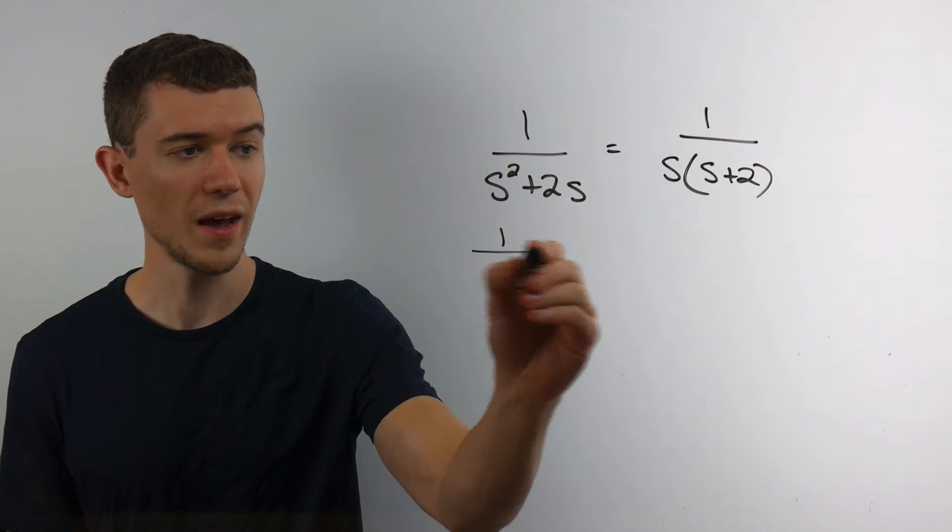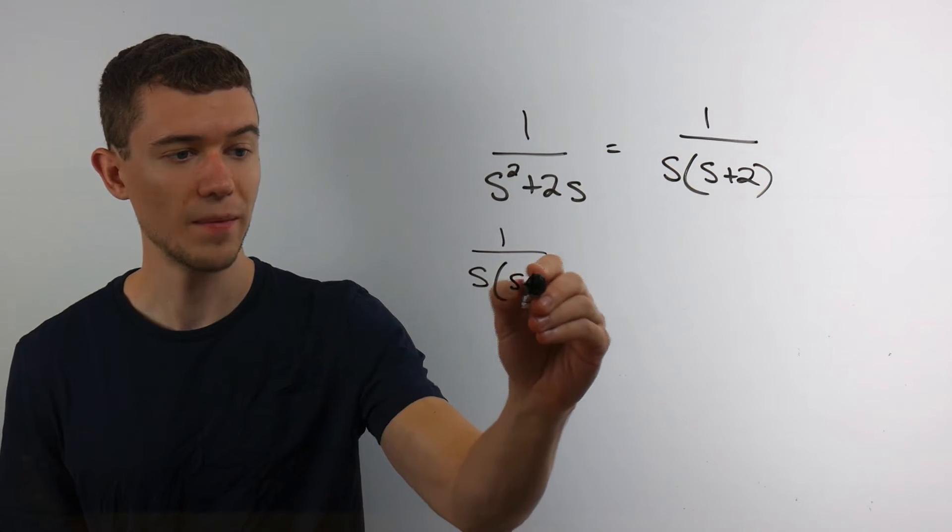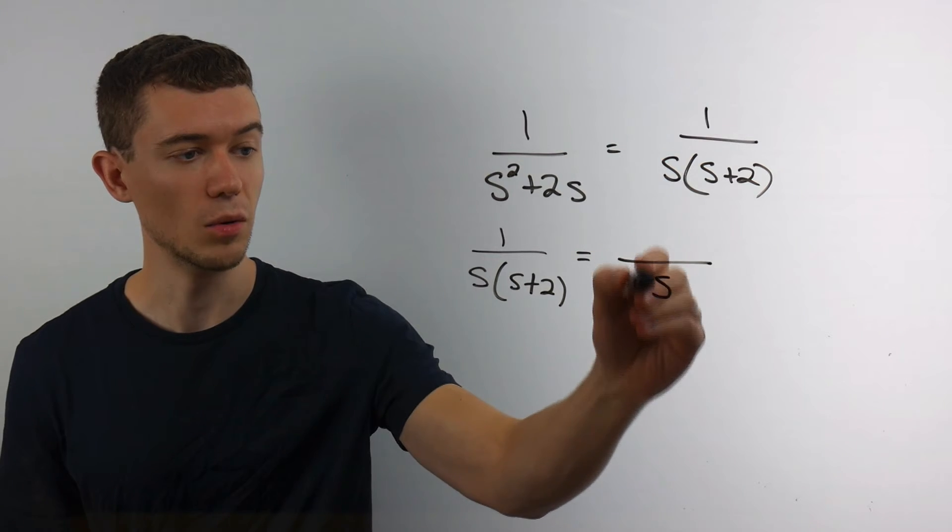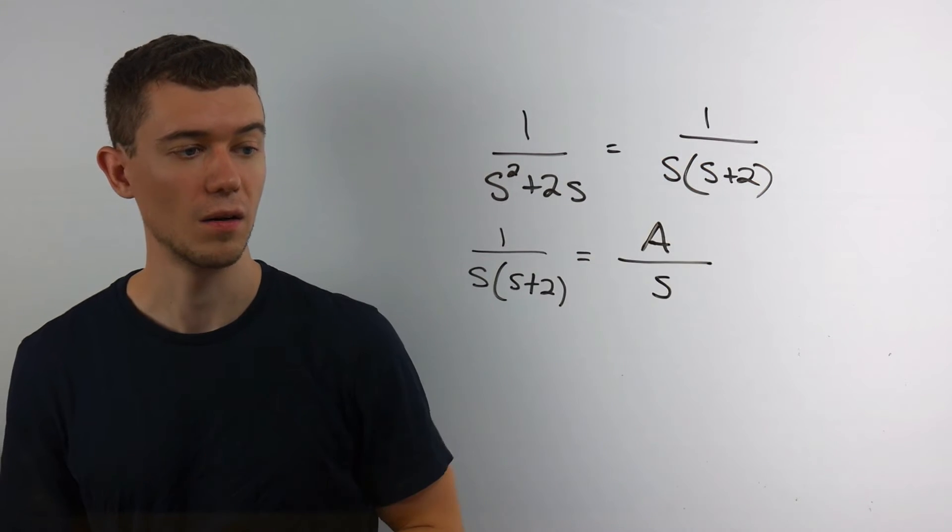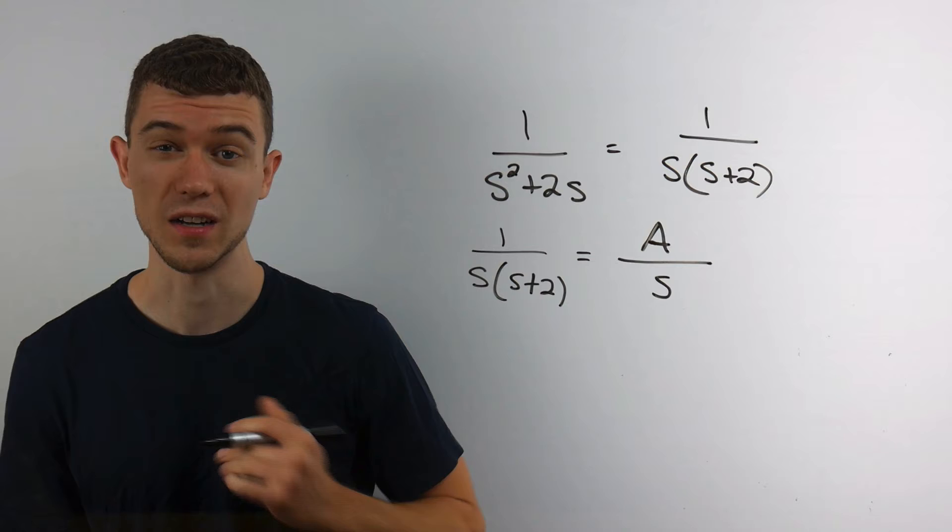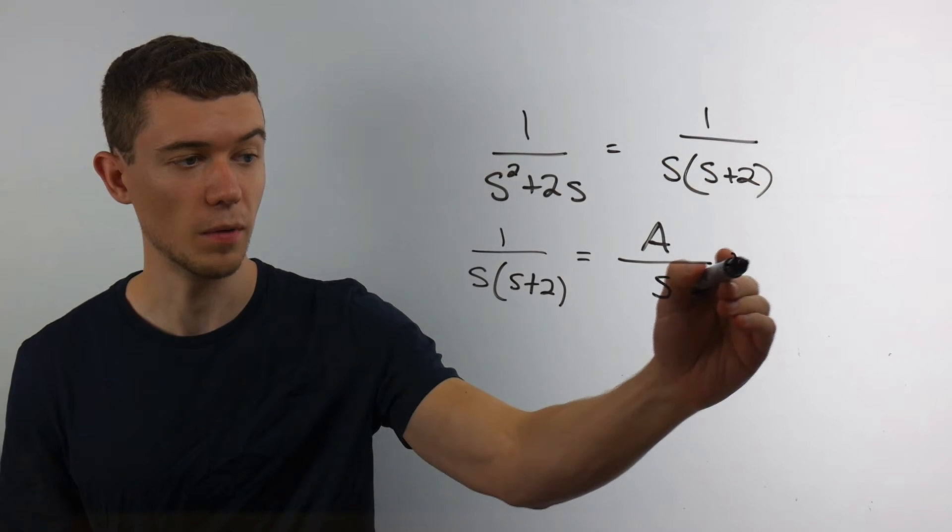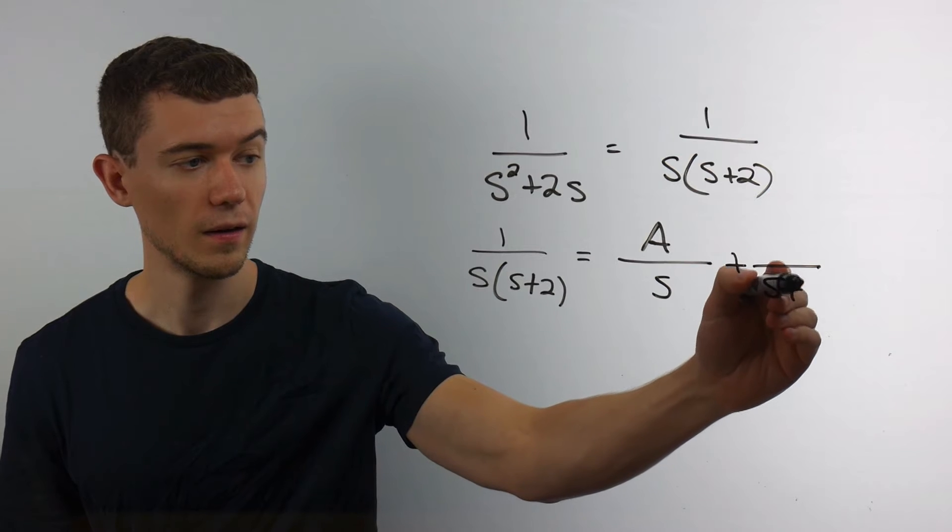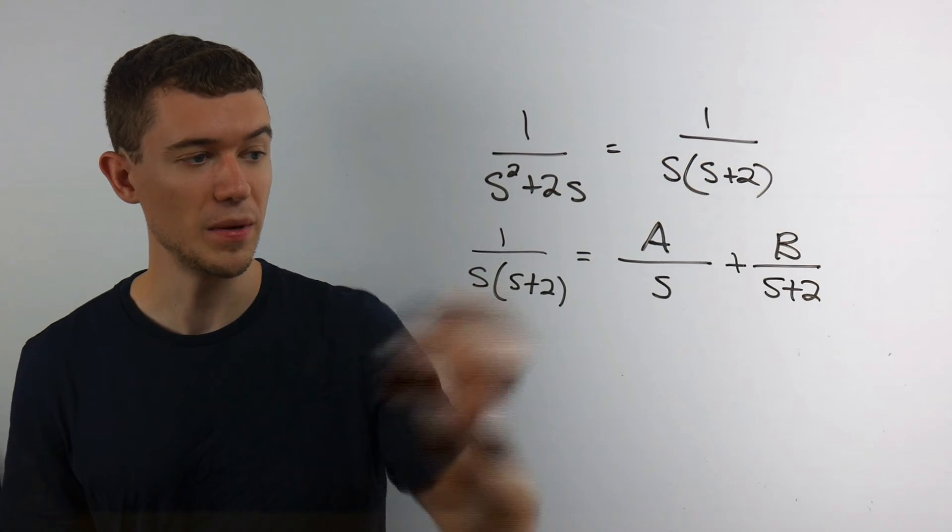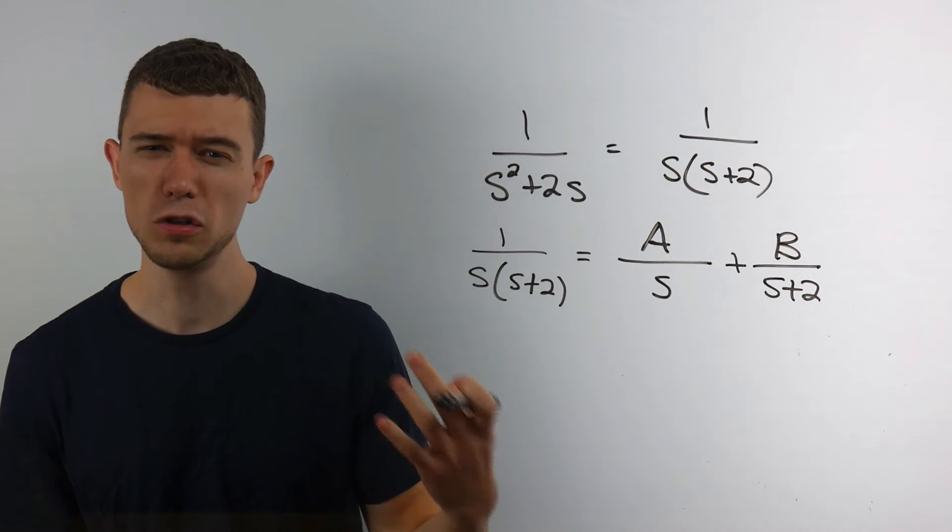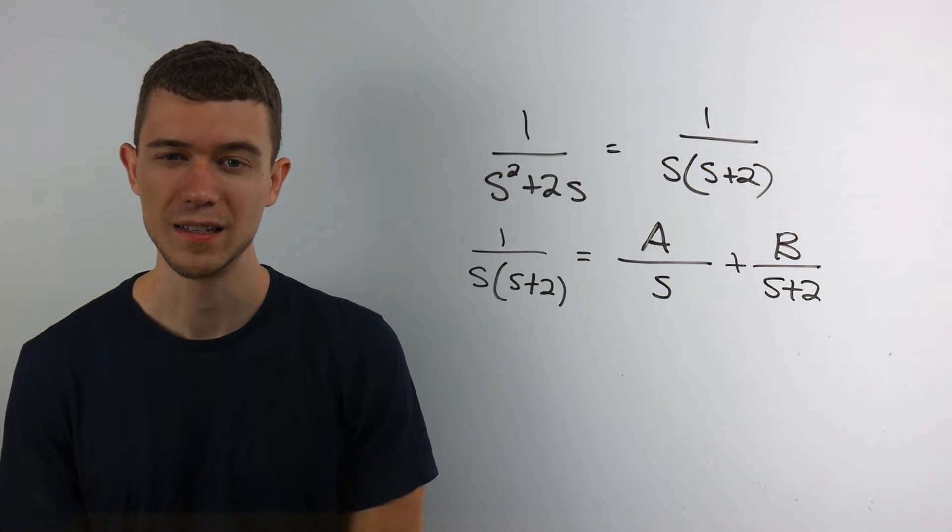So remember how that goes. We know that our fraction can be split into something over s. I'll call it a, just a number, just a zero degree polynomial over a first degree polynomial. And also splits up into b over s plus 2. There should be some a and b that satisfy this.